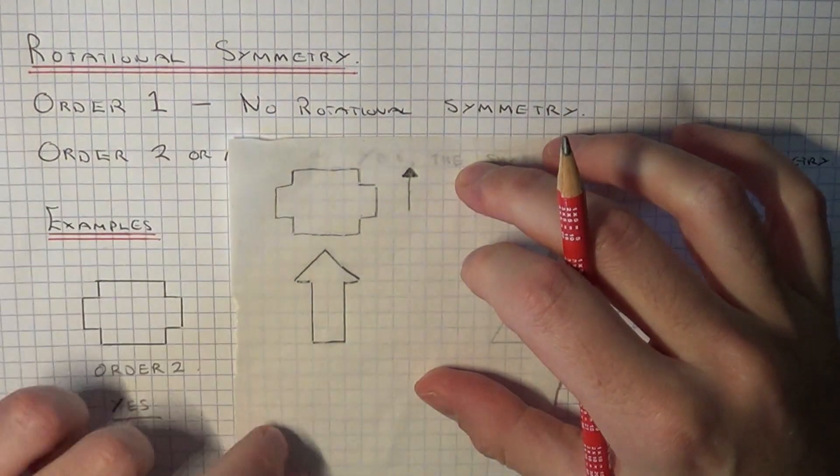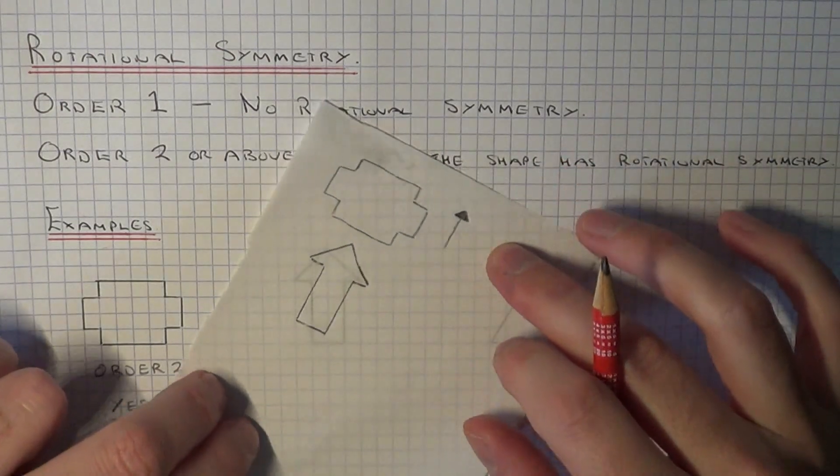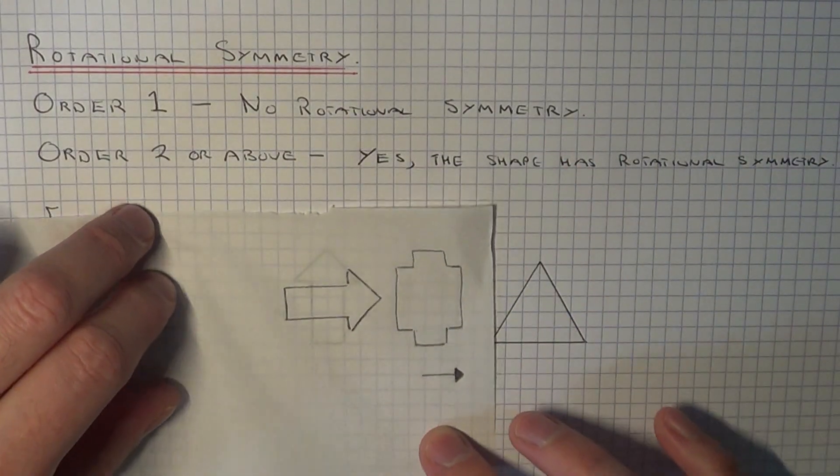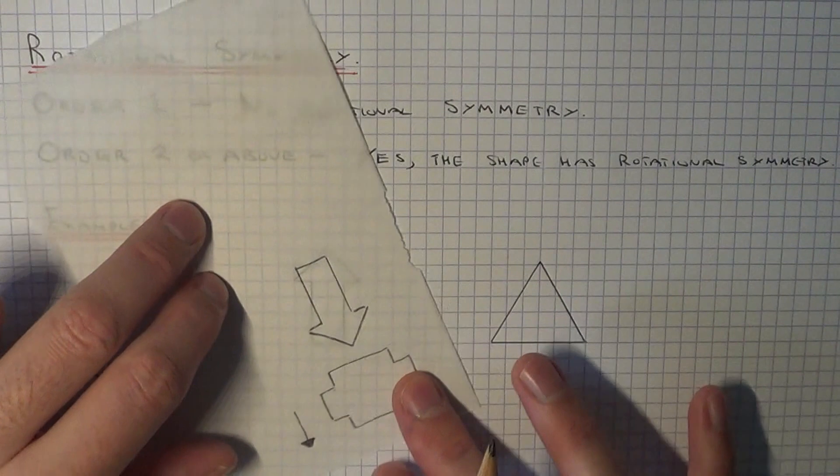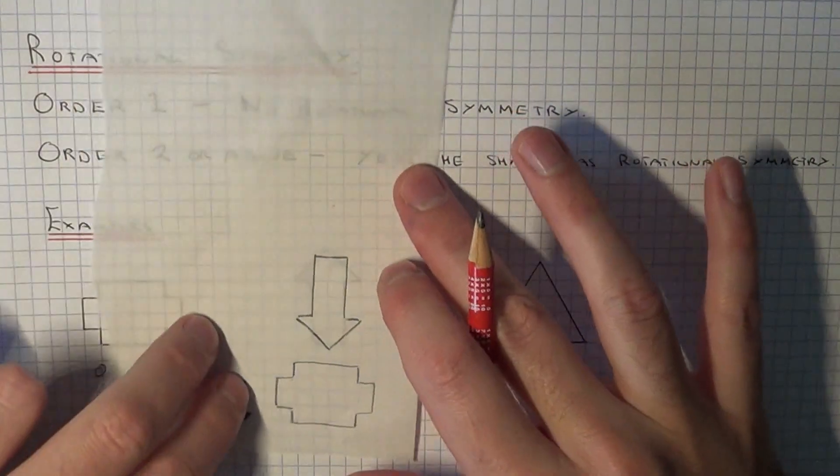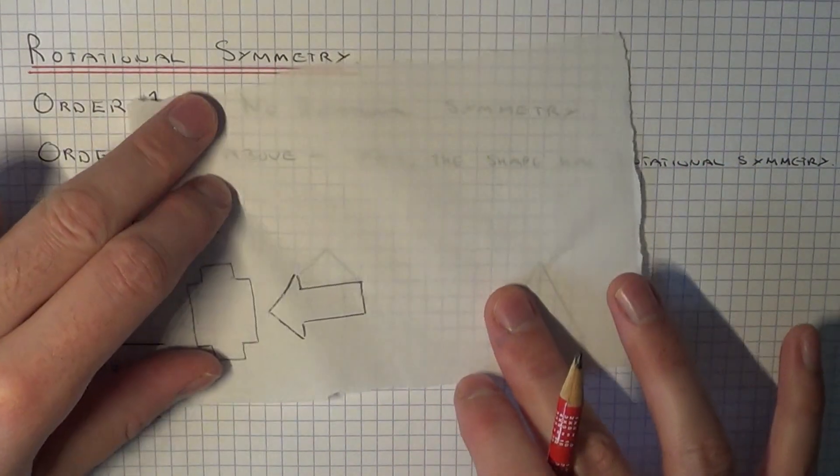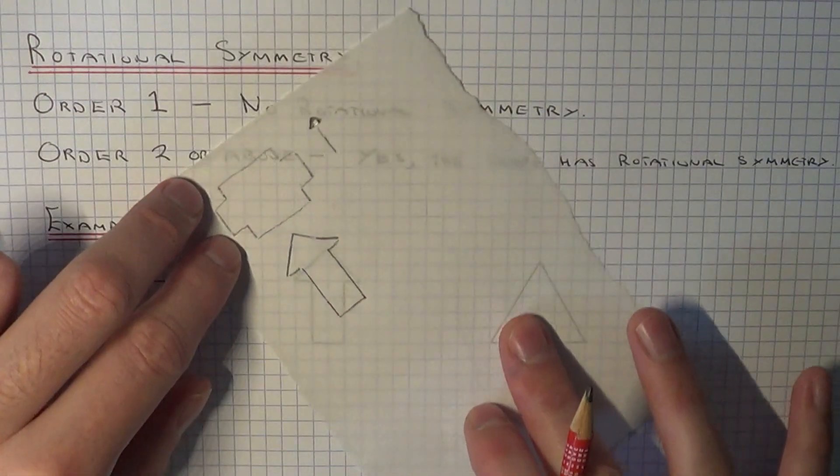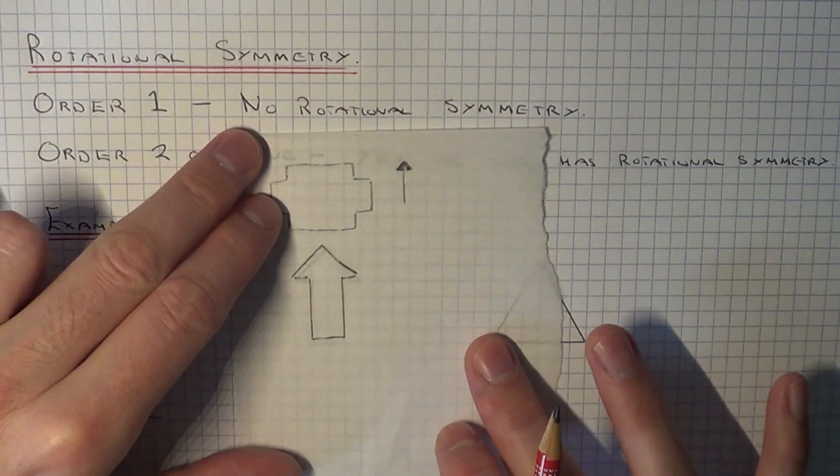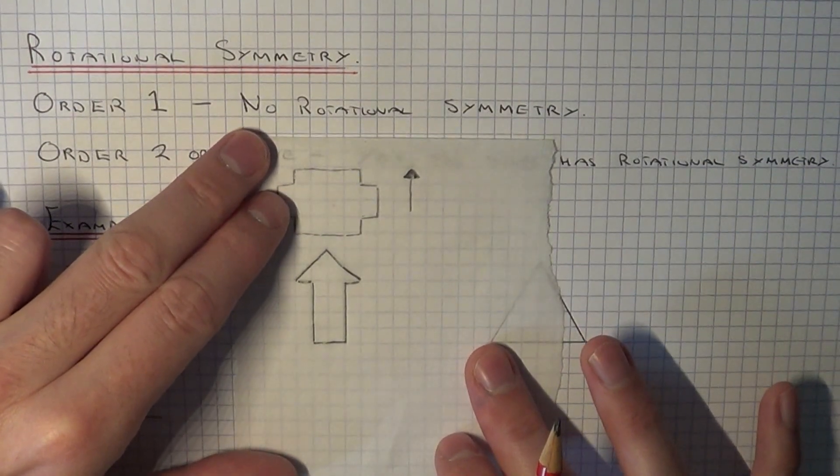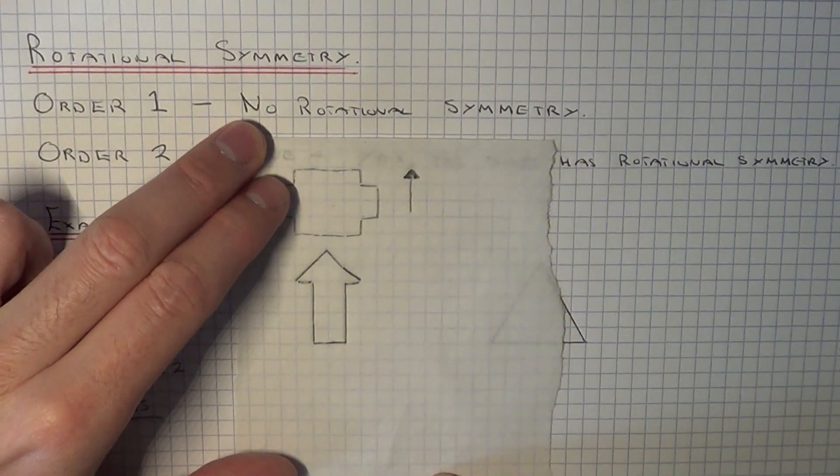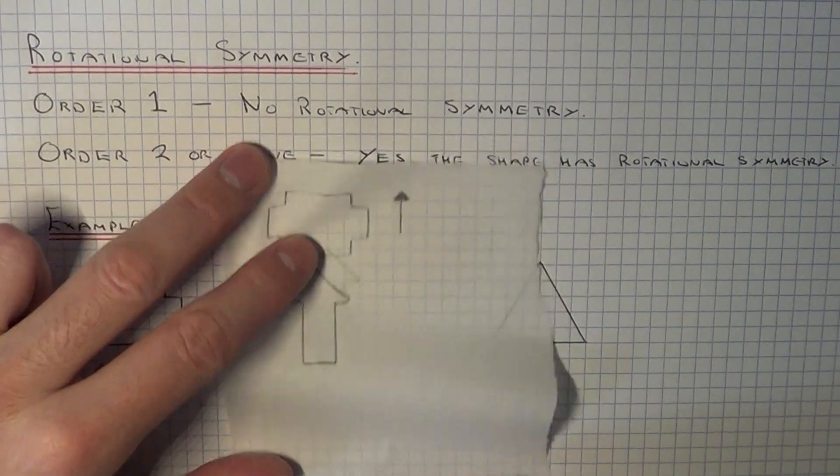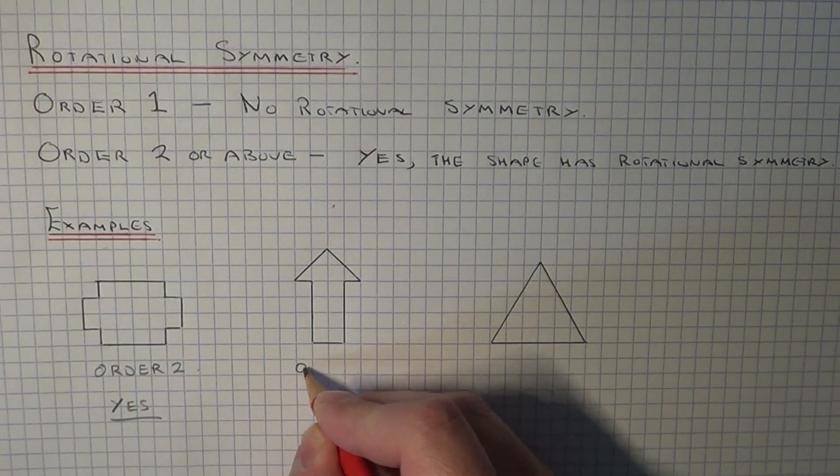So again, let's turn our shape around. So it's not fitting here. It's not fitting here. It's not fitting here. So it's just looking like once at the end. Okay, so it's only fit once at the end. So the order here will be one.